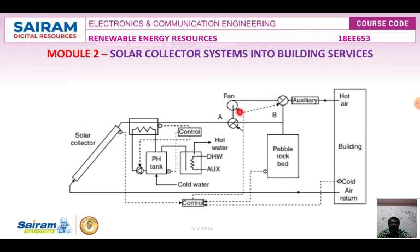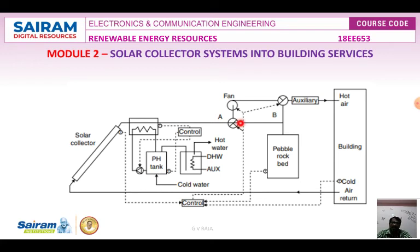In the first mode — when both dampers A and B are open — this is the normal daytime solar heating mode. The storage unit is bypassed. If the temperature sensor on top of the collector array reads below the level required for space heating, the auxiliary furnace automatically turns on and stores the thermal energy in the storage tank.